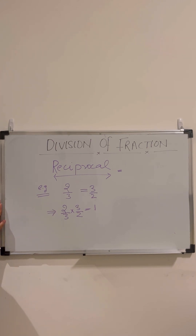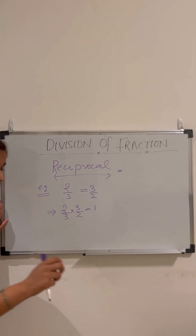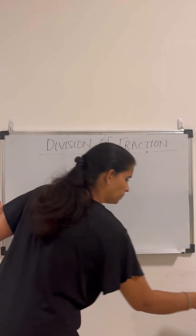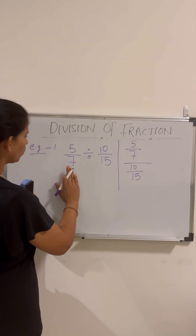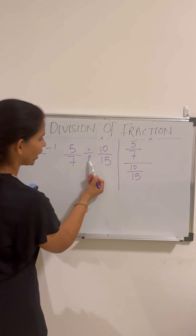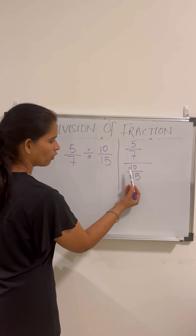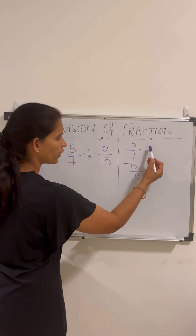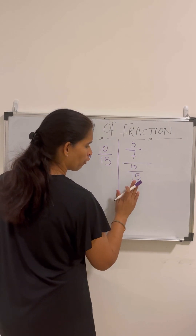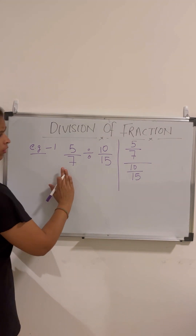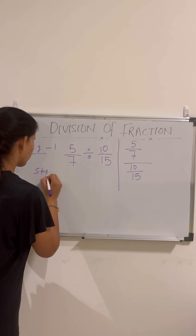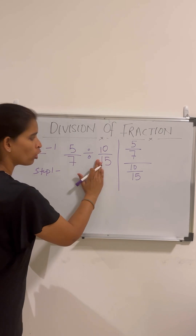Let's understand through an example. I have 5/7 divided by 10/15. One important thing — we can also write division of two fractions like a compound fraction. Now, step one to solve this is to find the reciprocal of the second fraction.